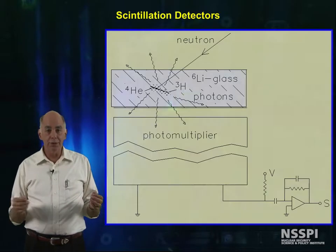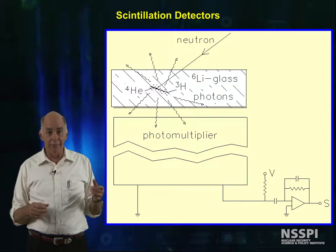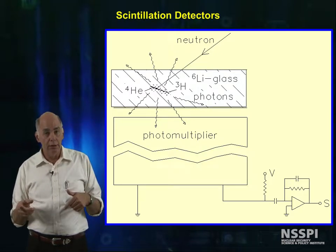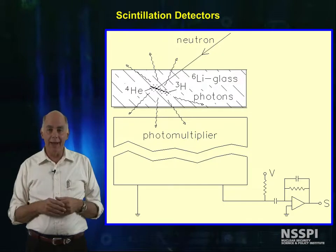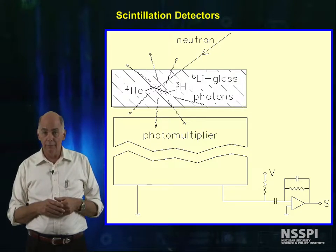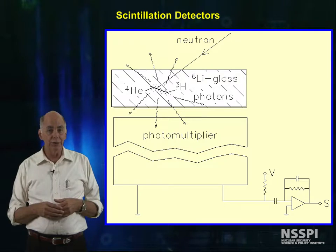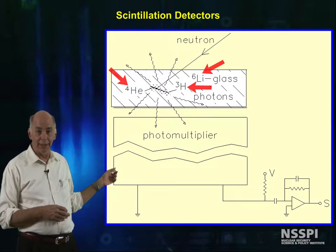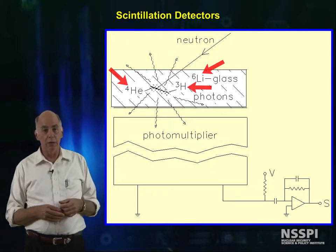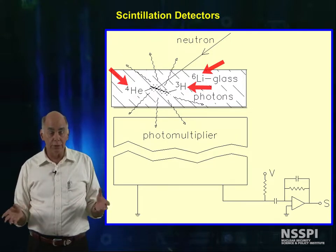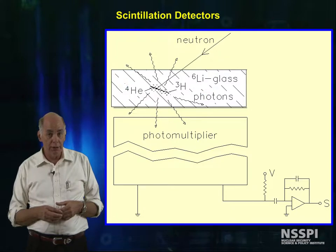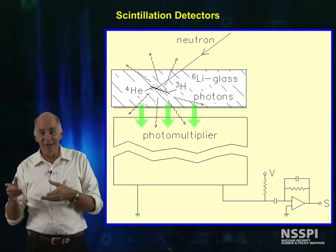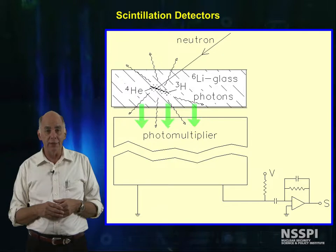Scintillation detectors change the energy from the charged particles that come from the interaction of a neutron to light, and this flash of light is used to detect the neutron. One such device is a lithium-loaded glass. As we've seen, a neutron interacts with the lithium producing an alpha and a triton. These charged particles deposit energy in the glass, which converts a small fraction of this energy to light. This light is somehow fed to a photomultiplier system to amplify the signal, and thus detect the neutron.